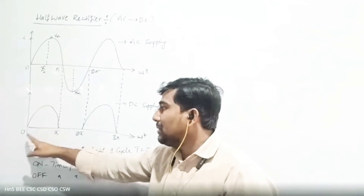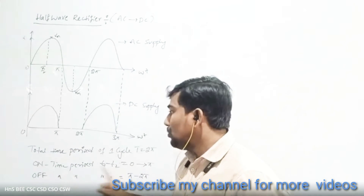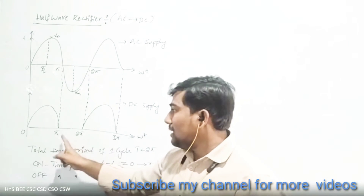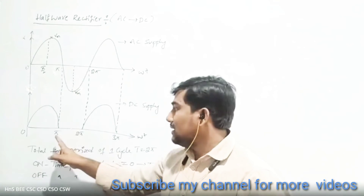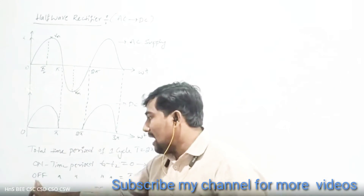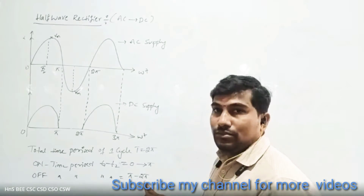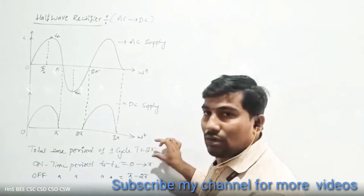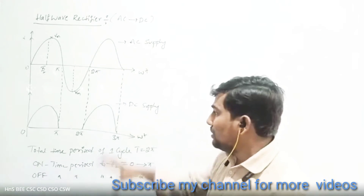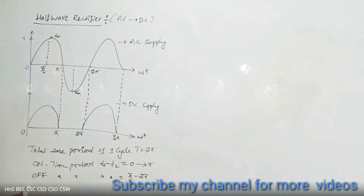The on condition waveform time period is zero to π, so I am writing t1 to t2 on period as zero to π. The off period is π to 2π. Simply writing: off time period is t1 to t2 equal to π to 2π. The total time period is 2π. Using this diagram, we will discuss some important points for the calculation and simplification.